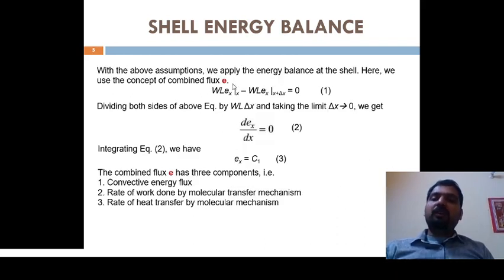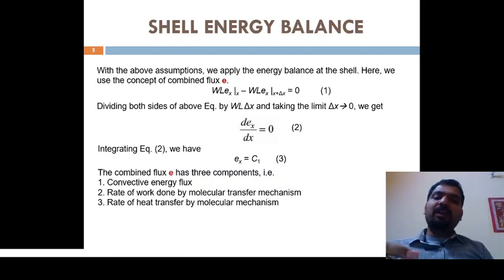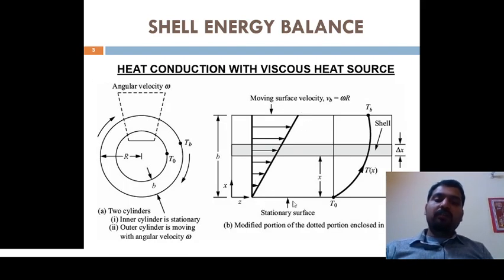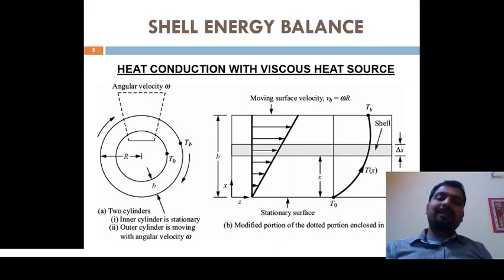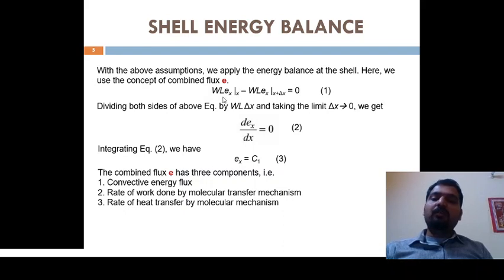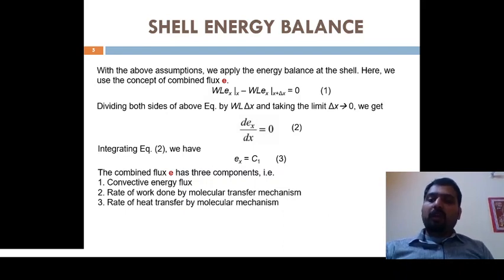From the above assumptions we now perform the energy balance on the shell. We use the combined energy flux, denoted by small e. The flux is converted to energy by multiplying by the cross-sectional area, which is the width times the length. The energy flux equation is: W·L·ex at surface x minus W·L·ex at surface x+Δx = 0. Dividing by the volume W·L·Δx and taking the limit as Δx → 0, we get the differential energy equation: d(ex)/dx = 0. Integrating gives ex = C1.